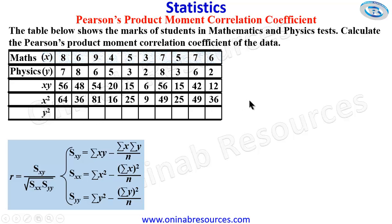So we are done with X. So we go for Y squared. Squaring Y, we have 49, 64, 36, 25, 9, 4, 64, 9, 36, and 4.